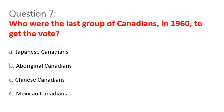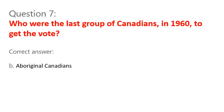Question 7. Who were the last group of Canadians in 1960 to get the vote? A. Japanese-Canadians. B. Aboriginal-Canadians. C. Chinese-Canadians. D. Mexican-Canadians. Correct answer: B. Aboriginal-Canadians.